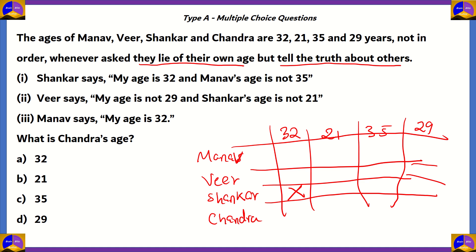Shankar also says Manav's age is not 35 — this is a true statement, so we cross out Manav at 35. Veer says his age is not 29, which means his age actually is 29, since they lie about their own age. So Veer's age is 29, and others cannot be 29. Veer also says Shankar's age is not 21 — a true statement — so we cross out Shankar at 21. Shankar can't be 32, 21, or 29, so Shankar must be 35, and the others can't be 35.